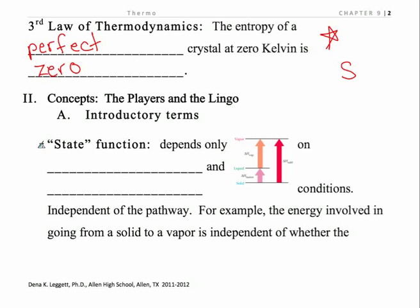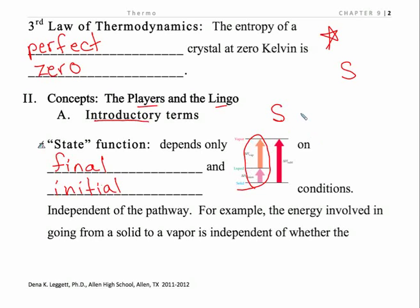Now let's get into this in a little bit more detail. We're going to talk first about the introductory terms — the players and the lingo that we're going to be using. A state function depends only on our final and initial conditions. The total energy in going from a solid to the gaseous state or vapor is the same whether we go through the liquid phase or whether we skip the liquid and set up conditions for sublimation. It only depends on our final and initial.